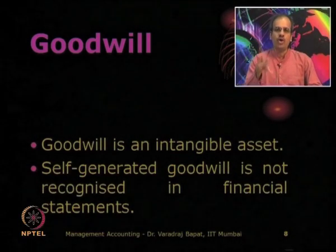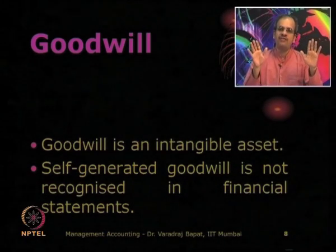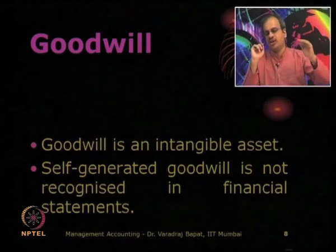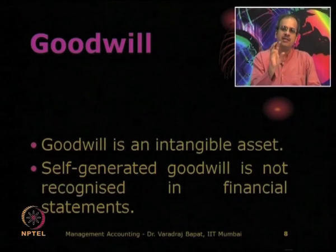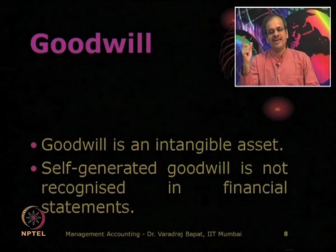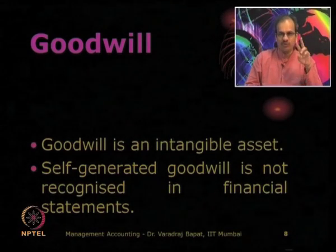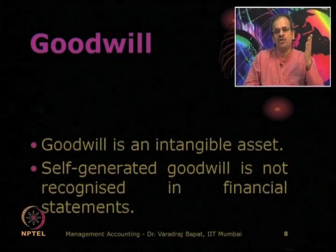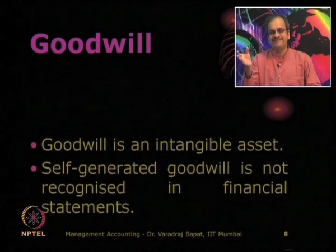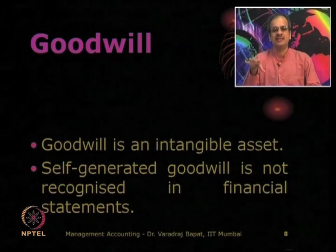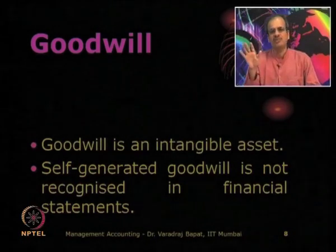The goodwill we have been discussing is self-generated goodwill, which is not recognized in financial statements. Even if a company has been working for a long time and has created a great name, accounting standards (GAAP) do not allow self-generated goodwill to be recorded. The main reason is that it is very difficult to reliably estimate — there is no objectivity, and many people would put many different values. Since accounts must be objective and reliable, something that is vague and purely judgmental cannot be included.